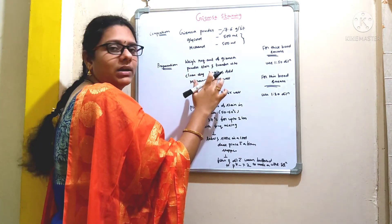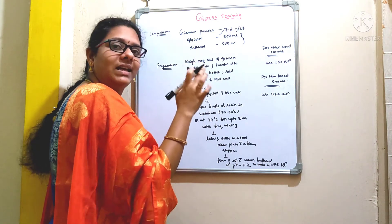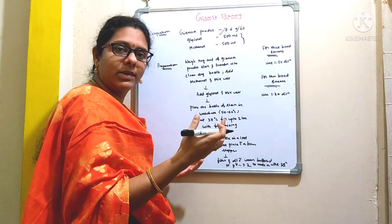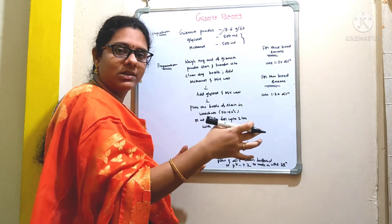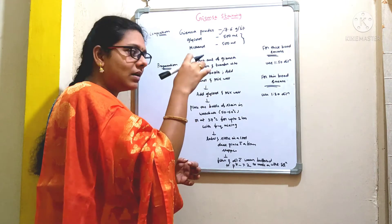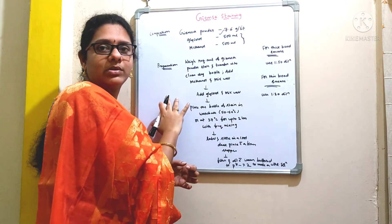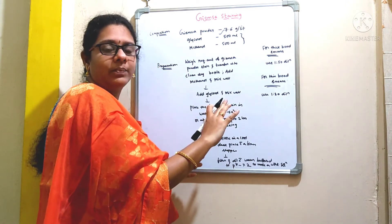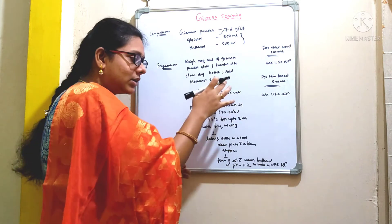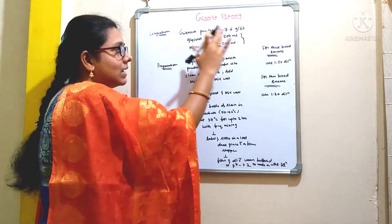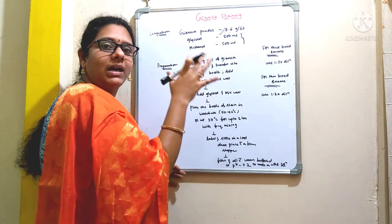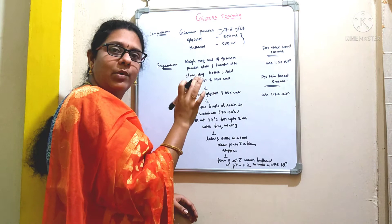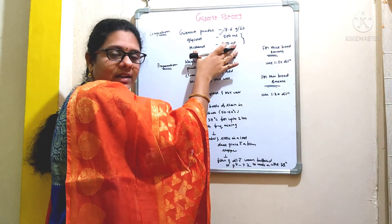First, weigh 7.6 grams of Giemsa powder and add it to a clean dry bottle. Make sure you use a clean dry bottle only — if any water drops are left in the bottle, that will contaminate the entire procedure. In any step, make sure there is no presence of water; if water contaminates the preparation at any step, it is going to spoil the dye.